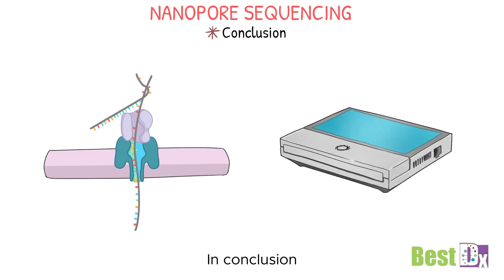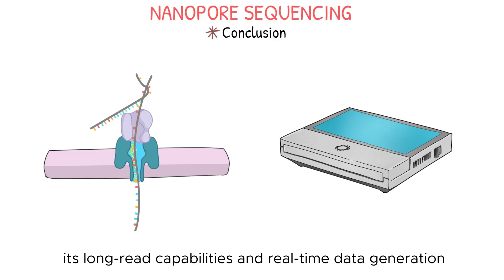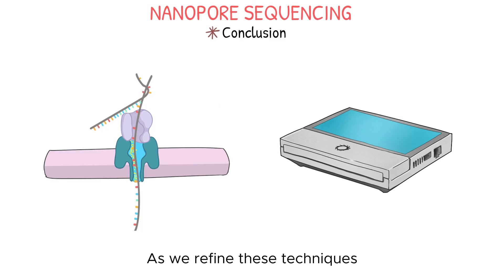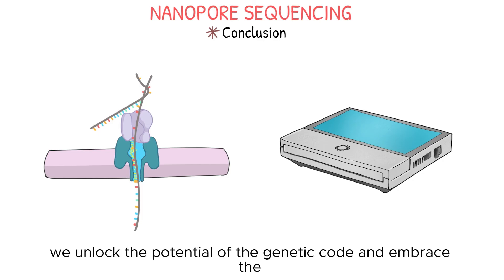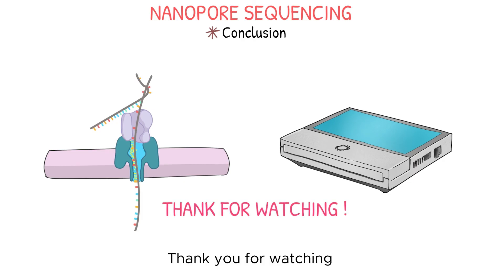In conclusion, third-generation sequencing has revolutionized genomics with its long read capabilities and real-time data generation. As we refine these techniques, we unlock the potential of the genetic code and embrace the exciting discoveries awaiting us on this scientific journey. Thank you for watching.